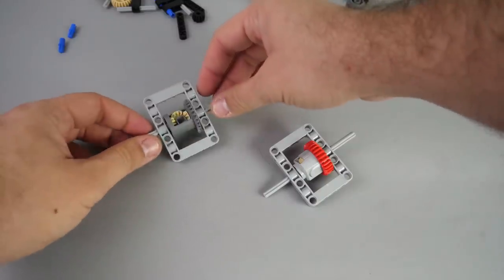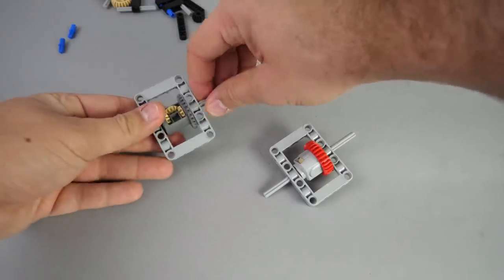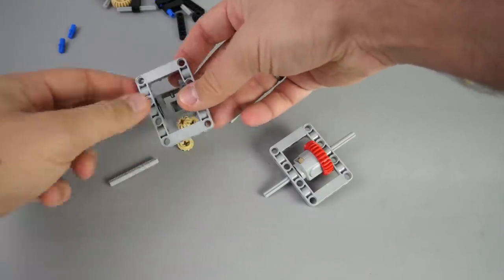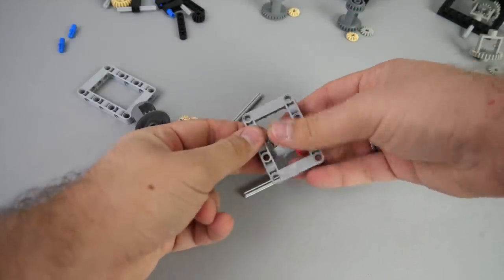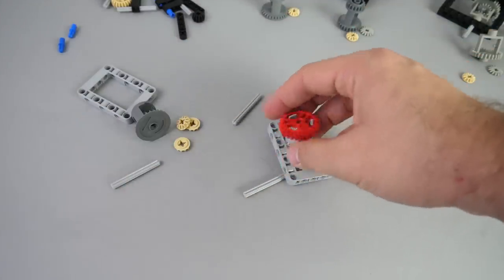One final bonus point for the new differential: when you remove the axles from the old one, the small gears always fall out instantly and you can try to find them on the carpet. With the new one you won't have this issue anymore. The gears are locked inside securely.